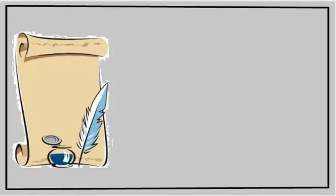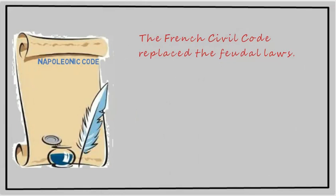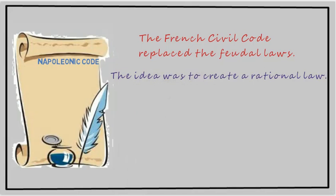The Napoleonic Code emphasized clearly written laws. It replaced the feudal laws which were controlled by the big landlords, nobles, or king. The Code was an idea to create a rational law free from all past prejudices. Napoleon believed in rule of law, i.e., set rules and regulations, or equality before law.